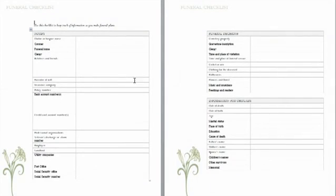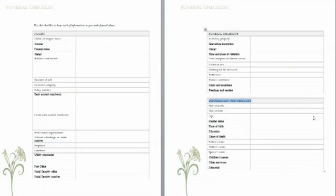Now while this template does not generate a layout for the obituary directly for you, this is all the information that you will need that any newspaper would require for sending in an obituary. And as you see, this third section says information for obituary, including their date of birth, date of death, age, and all that information you'll need.